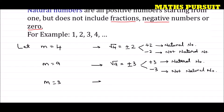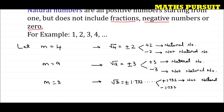Similarly, if we consider m equal to 3, then root 3 is equal to plus or minus 1.732... and it keeps going because this is an irrational, non-terminating number. So we get plus 1.732 and minus 1.732. These are fractions and are not natural numbers. So 3 is a natural number, but root 3 gives us 1.732 plus or minus, and fractions are not natural numbers.